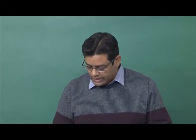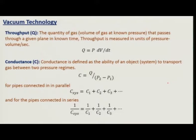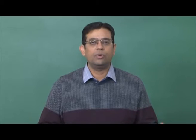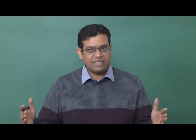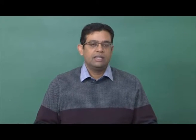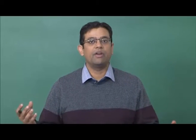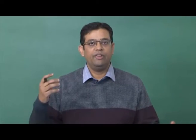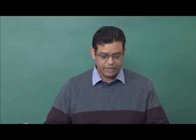Let us move forward and learn about how we create vacuum. To create vacuum, remember we have the ideal gas law: PV = nRT. So if the volume of our chamber is fixed and temperature is fixed, to lower the pressure we need to reduce n. n is the number of atoms or molecules of the gas. So we need to take out gas from our chamber to reduce pressure.